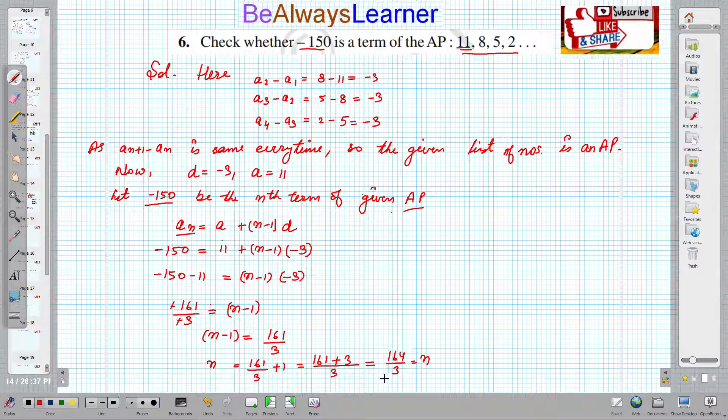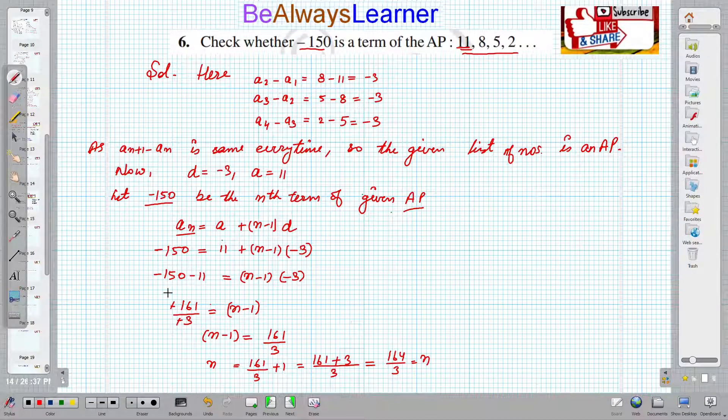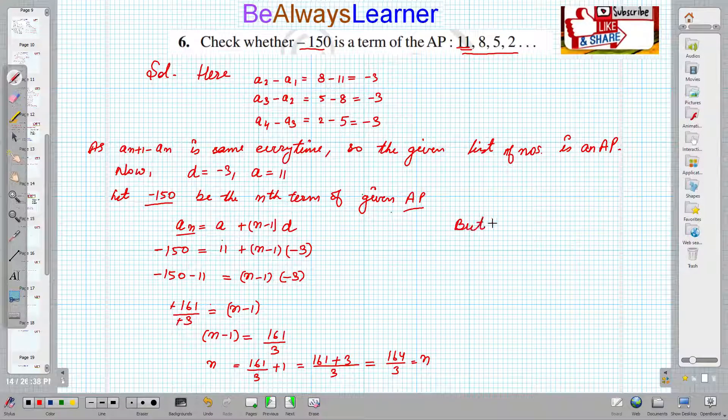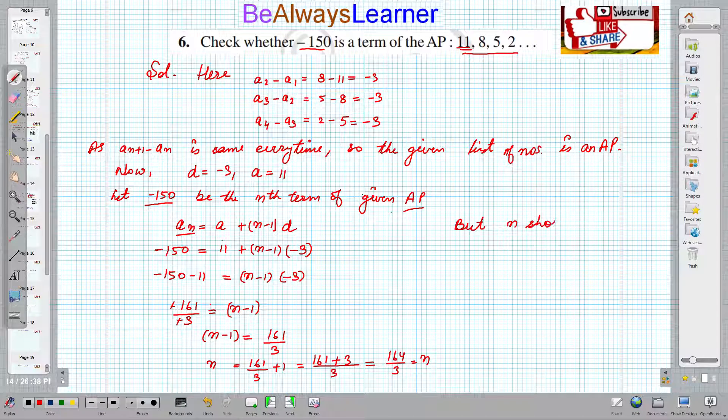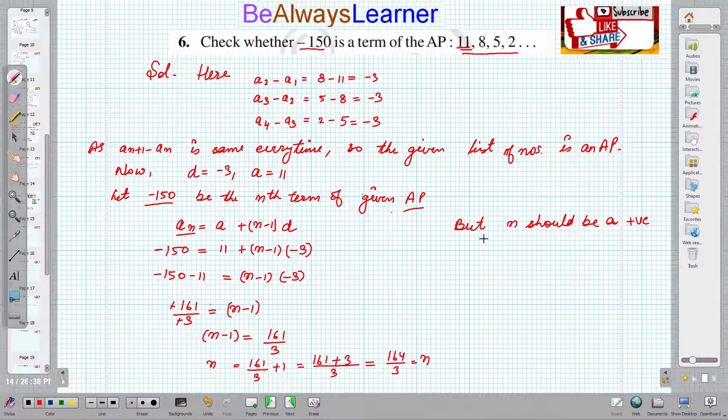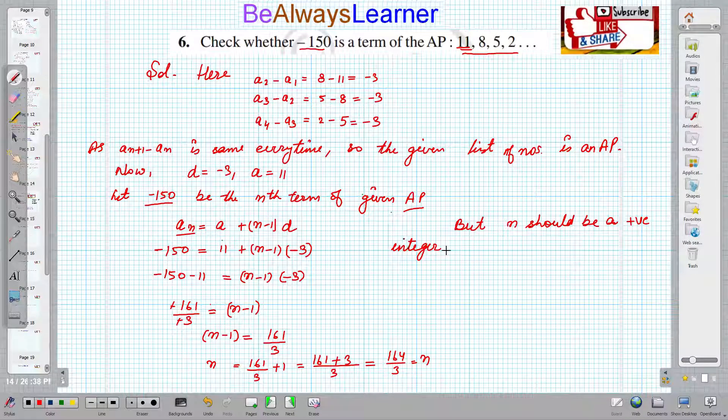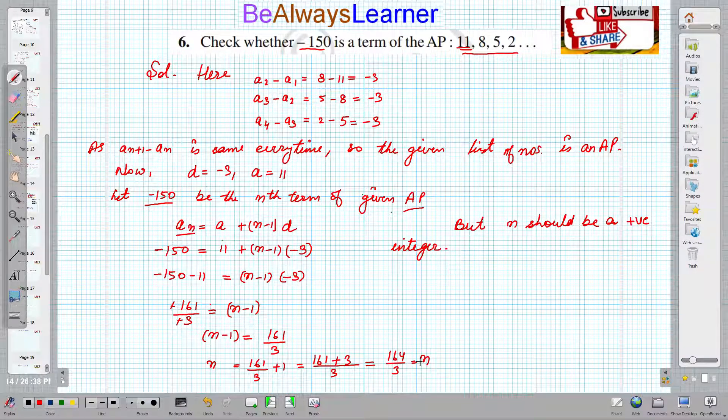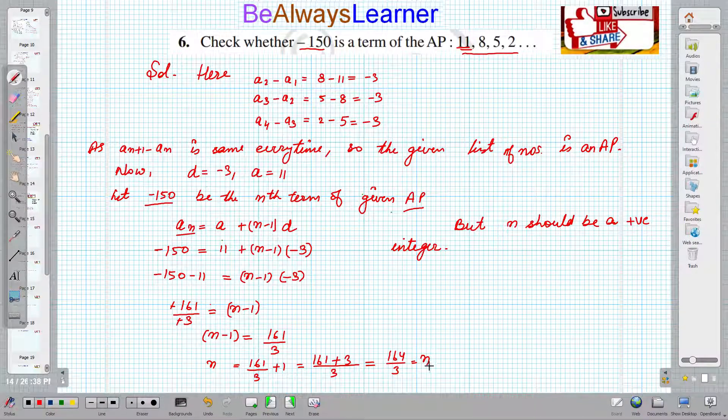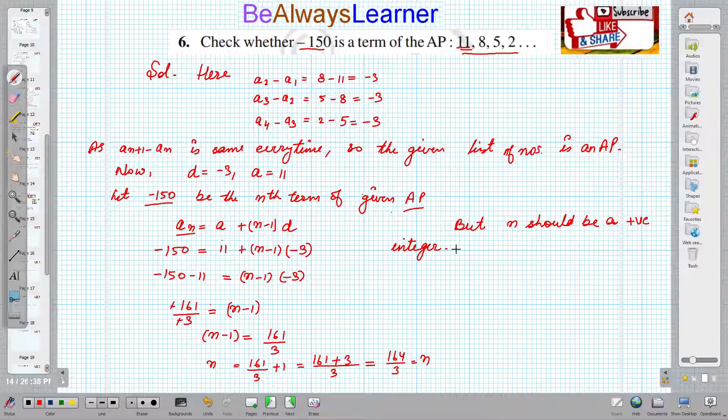So we can comment here that n should be a positive integer. But n is 164/3. Because n is a term, terms can be 1, 2, 3, 4, 5, but there are no terms like 3/2. So here n is 164/3, which is not a term. So what can we write?